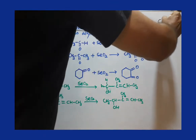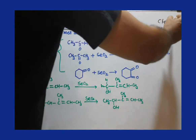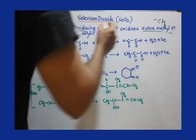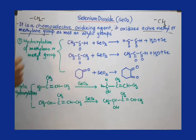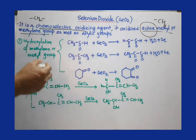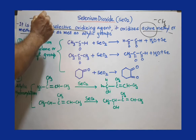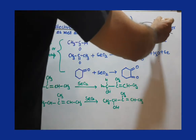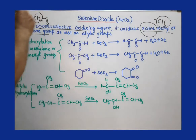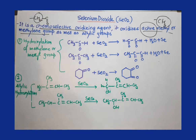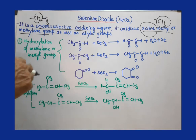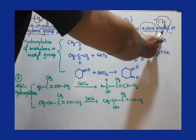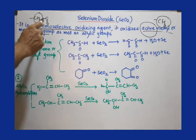Selenium dioxide oxidizes active methyl or methylene groups — methyl means CH3 and methylene means CH2. For these groups to be active, they must have at least one electron-withdrawing group, such as a carbonyl group. When an electron-withdrawing group is present, the hydrogens become more acidic, so we call it an active methylene or methyl group.